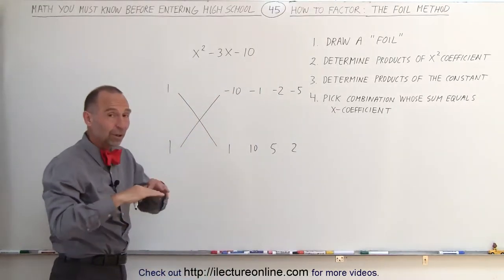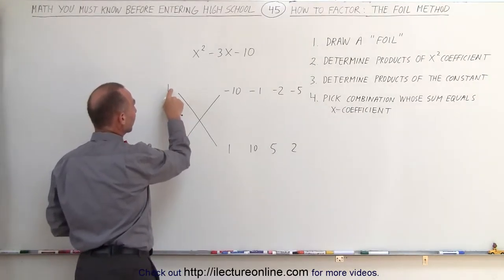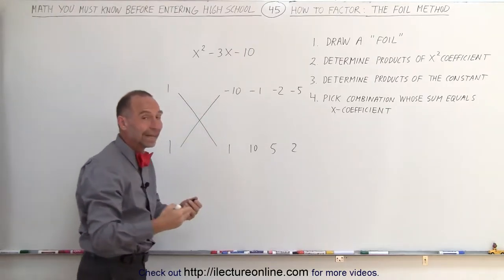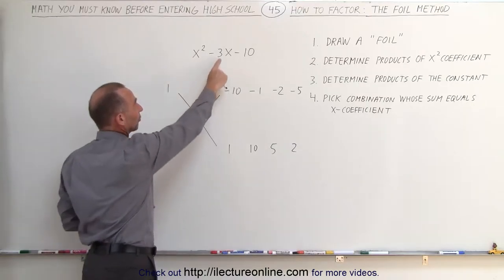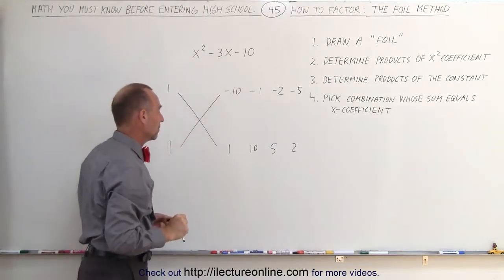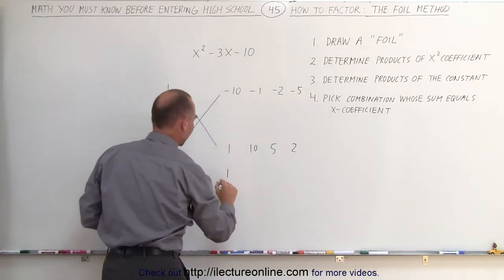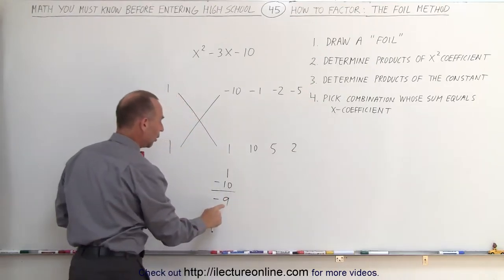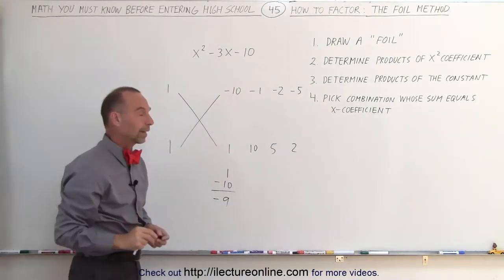To find the numbers that will give us the factored form, all we have to do is multiply this number by this number, this number by this number, and add them together and see if we get the middle coefficient right here. The coefficient of the x term, minus 3. So 1 times 1 is 1. 1 times negative 10 is negative 10. When you add it together, you get negative 9, which is not negative 3, which means those are not the two correct numbers.